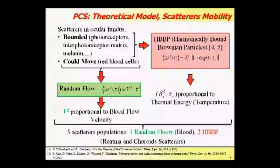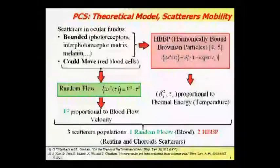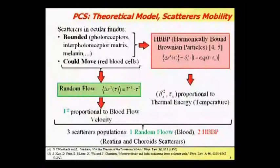Scattering in ocular fundus is mainly caused by a mixture of macrostructures and molecules. Some of the structures could move, whereas others are fixed. In order to describe the mean square displacement, we exploit random flow model for describing the red blood cell motion, whereas we exploit harmonically bounded Brownian particle model for describing retinal and choroidal scatterers mobility. It's important to notice that from V-square it's possible to retrieve information about the blood flow, whereas from delta and tau, it's possible to retrieve information about the temperature.